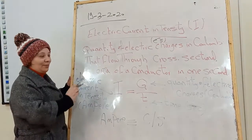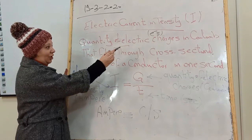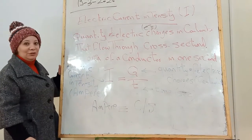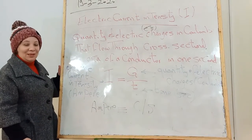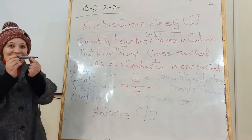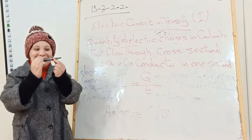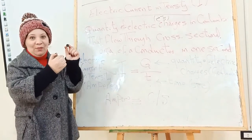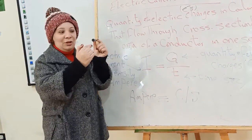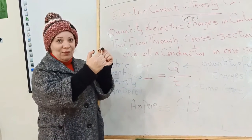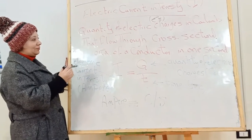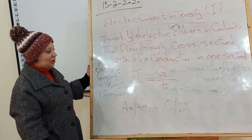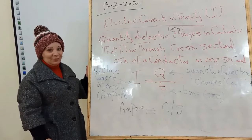Electric current measures the electric charge that flows through the cross-sectional area of a conductor. This is the cross-sectional area of a conductor in one second. Quantity of electric charge in coulombs that flows through cross-sectional area of a conductor in one second.